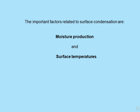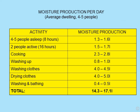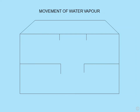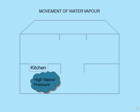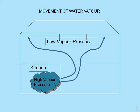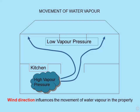The important factors related to surface condensation at this stage are moisture production and surface temperatures. Moisture production per day figures will vary slightly, but let us assume 14 to 17 litres per day of water is being produced. The other feature about water vapour is that it moves. Where is most water vapour produced? There's a high vapour pressure in the kitchen and bathroom — large areas of water vapour production. Because it exerts a pressure, it will move down its pressure gradient into other areas of lower vapour pressure, and this may allow problems to occur in these areas. Also note that wind direction influences the movement of water vapour in the property.